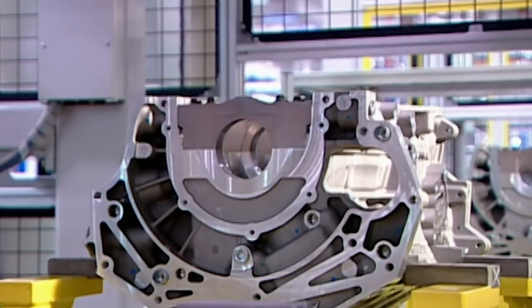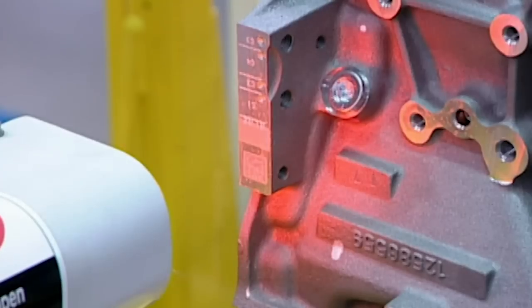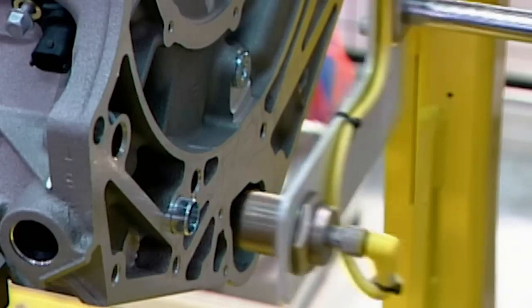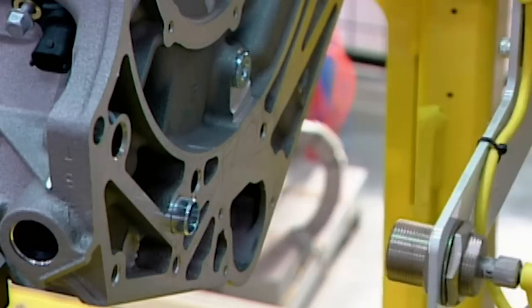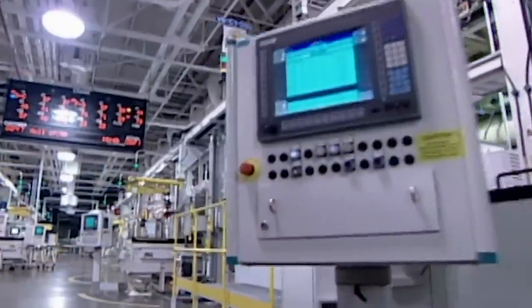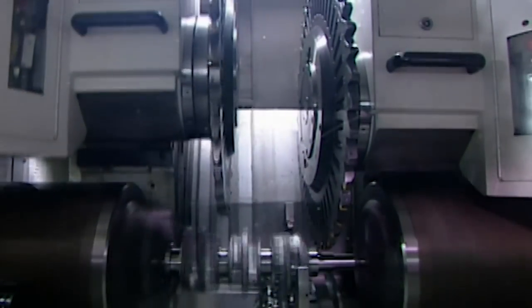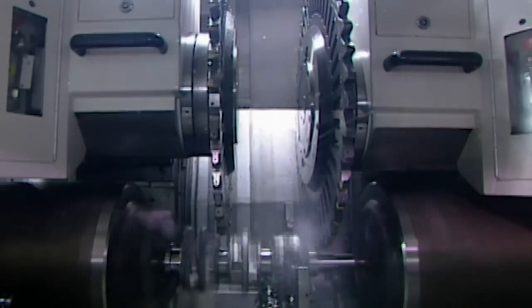After machining the engine block travels upside down to the engine assembly line. When it arrives a scanner records the block's traceability code, a barcode that enables the factory to track the block through every stage of production. As the engine block travels down the line, devices ensure that each component is installed properly.